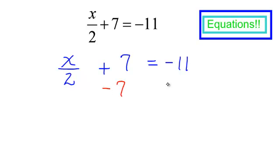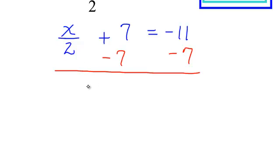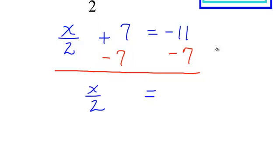But if you subtract 7 from the left, you have to subtract 7 from the right. On the left side, I will have x over 2. And sure enough, a positive 7 and a negative 7 will cancel. I planned it that way. On the right side, a negative 11 and a negative 7.